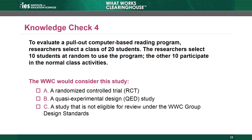Knowledge Check 4. To evaluate a pull-out computer-based reading program, researchers select a class of 20 students. The researchers select 10 students at random to use the program; the other 10 participate in normal class activities. The WWC would consider this study A: a randomized controlled trial, B: a quasi-experimental design study, or C: a study that is not eligible for review under the WWC group design standards. The answer is A — this is an RCT. The study randomly assigned all 20 students in the experiment. Assignment was entirely by chance and each unit had a non-zero probability of assignment to each group. The study text doesn't provide any reason to question the randomization process, so we can conclude this is an RCT.